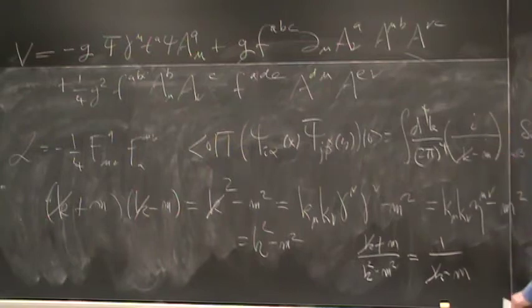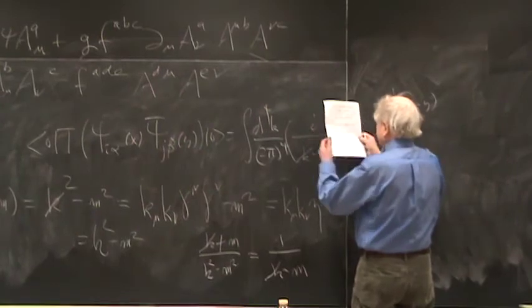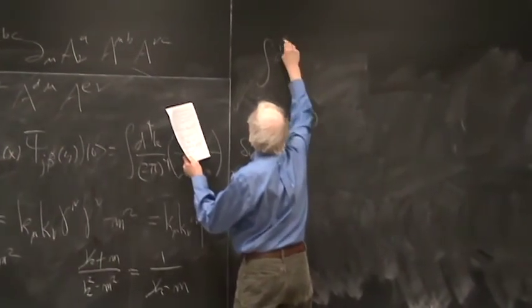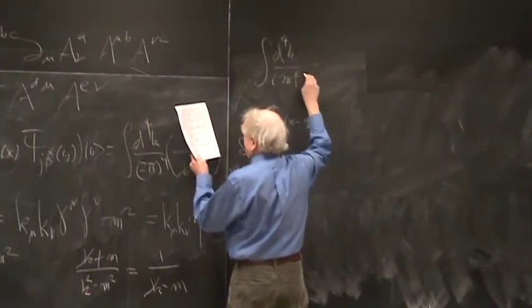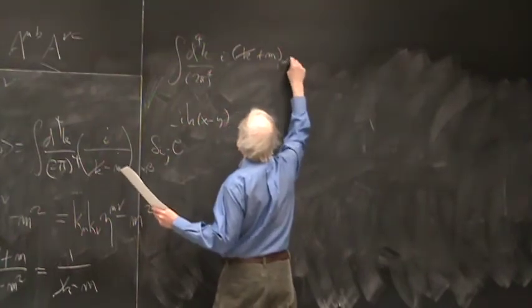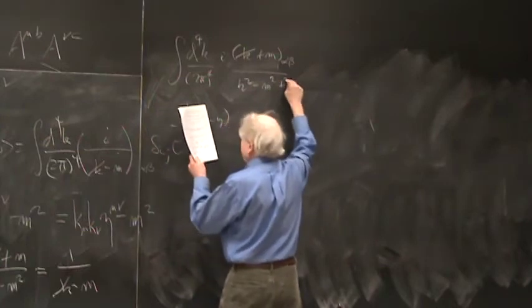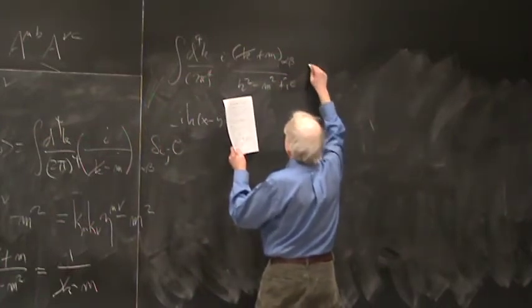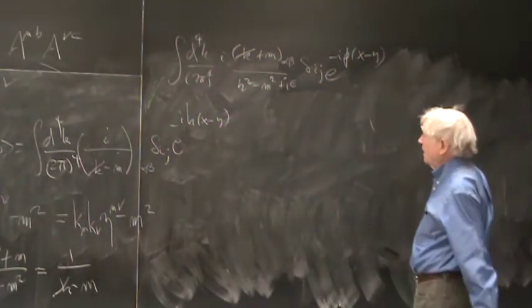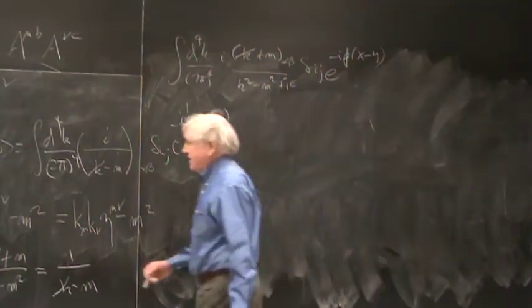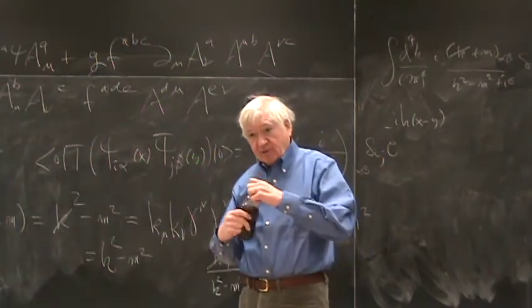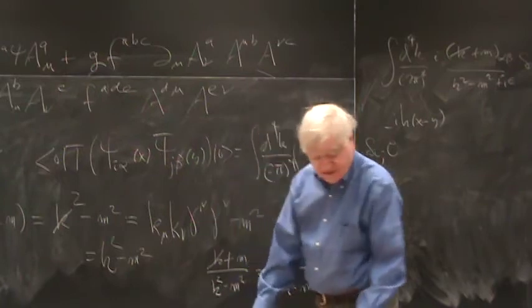And so this is what you use here. So in other words, the actual form of this, then, that you use is d fourth k over 2 pi to the fourth, i k slash plus m alpha beta, divided by k squared minus m squared plus i epsilon, delta ij, e to the minus ik dot x minus y. Okay, so that's the fermion propagator. The delta ij is because if you have different flavors of fermions, they only match if they're the same, otherwise you get zero.